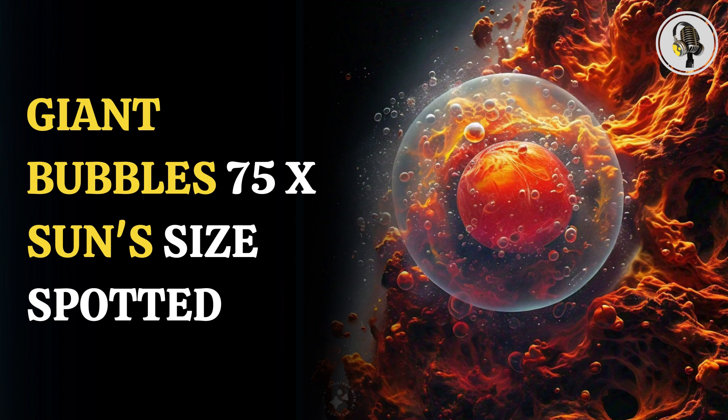Convection creates the beautiful granular structure seen on the surface of our sun, but it is hard to see on other stars, said co-author Theo Khouri. With ALMA, we have now been able to not only directly see convective granules, with a size 75 times the size of our sun, but also measure how fast they move for the first time, he added.